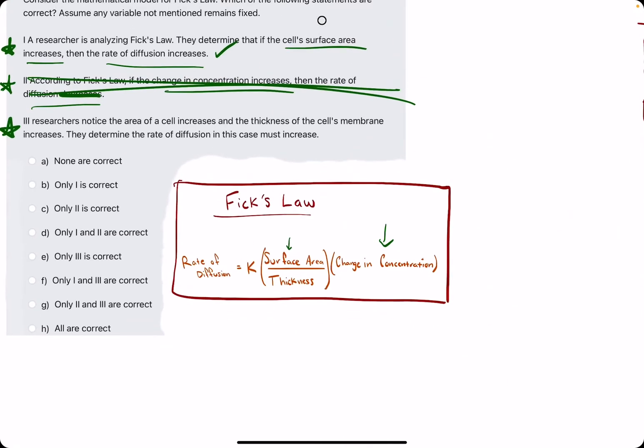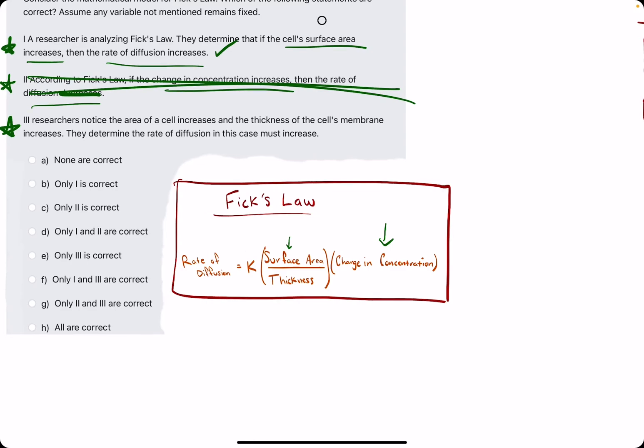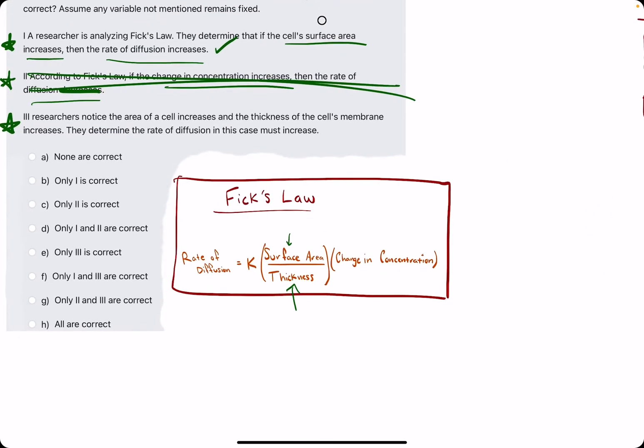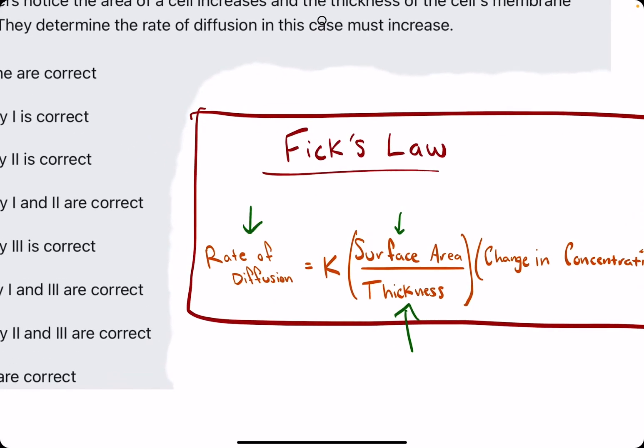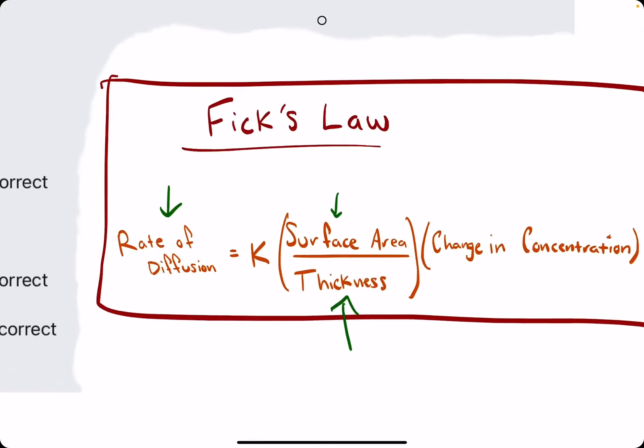So they say the surface area as well as the thickness increase. So both surface area and thickness increase. If the numerator and denominator are increasing, there's no telling what the rate of diffusion will do because if the numerator, surface area, increases, then that means rate of diffusion will increase. But if thickness increases, that means that rate of diffusion decreases.